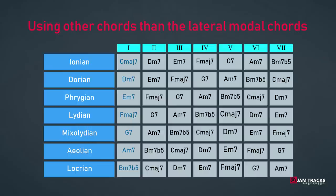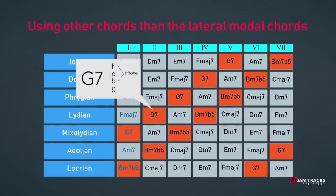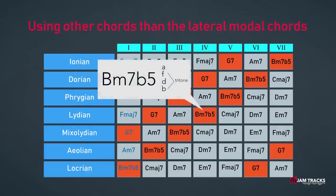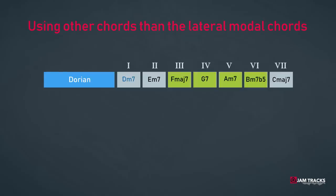We will extend the triads to seventh chords to have a little more to work with. In this table, the no-go chords are marked: G7 — the dominant chord with tritone B-F — and B minor flat 5, also a dominant chord with the tritone B-F. Now let's have a look at the remaining chords: the 3rd, 4th, 5th, and 6th degree, taking D Dorian as an example. The 3rd degree in Dorian is an F major chord, which has two notes in common with the D minor chord.